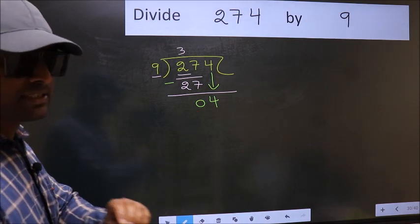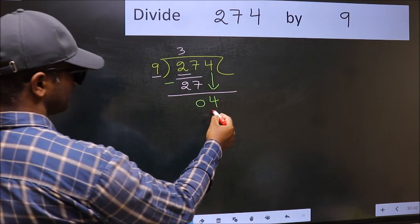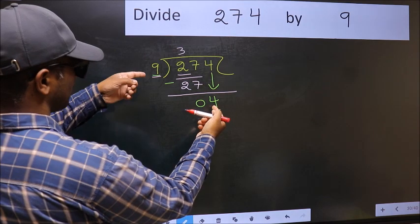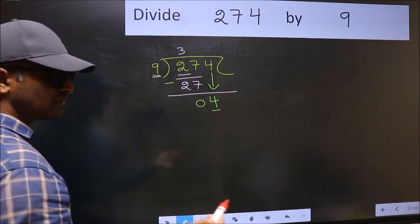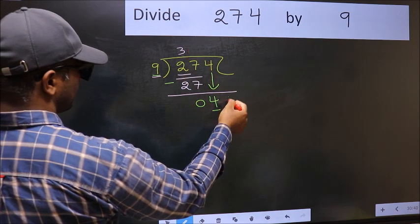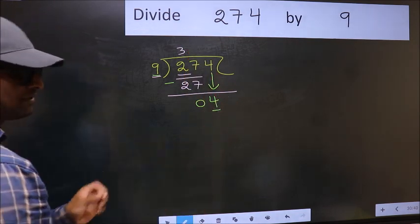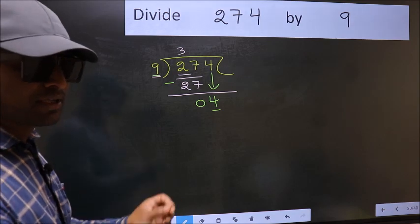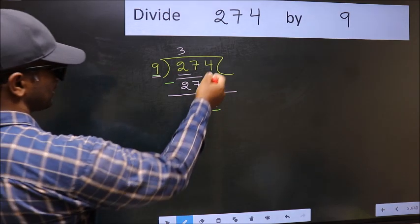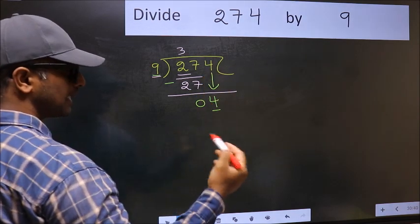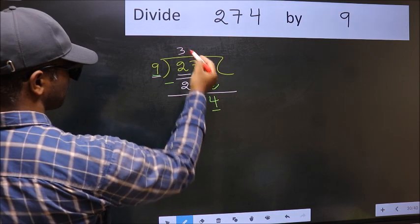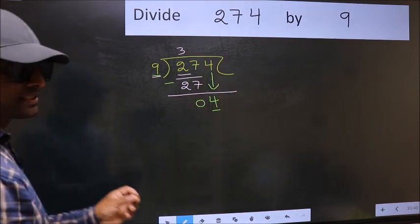And the mistake is this. Here we have 4 and here 9. 4 is smaller than 9. So what many do is they directly put dot and take 0, which is wrong. Why is it wrong? Because just now you brought this number down, and in the same step you want to put dot and take 0, which is wrong.